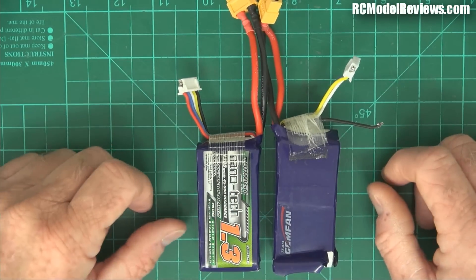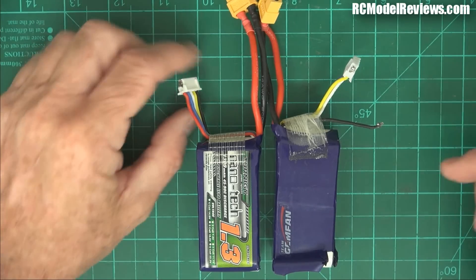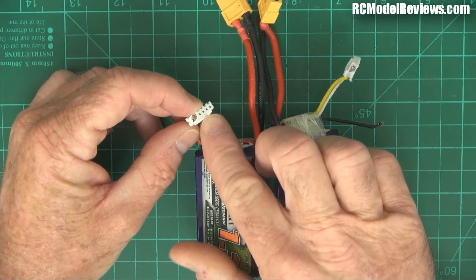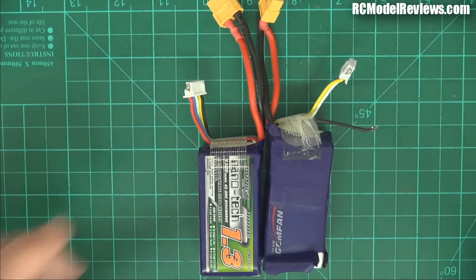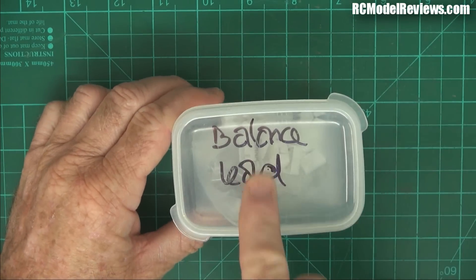Ideally you want to repair the balance lead on these batteries. You could get a balance lead off an old battery you've thrown out and use that, but chances are the plastic on that's already broken too. But there is a solution at hand - look at this balance lead.